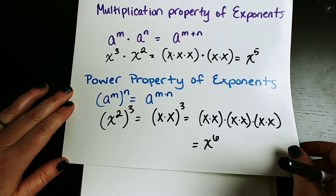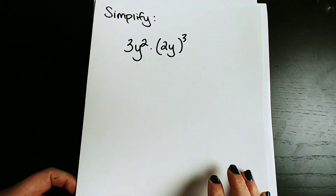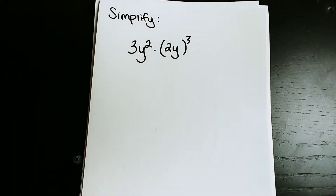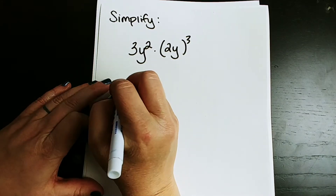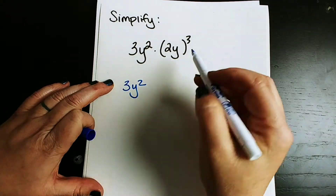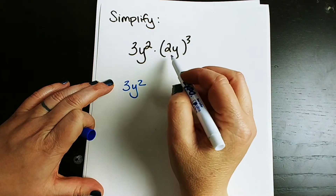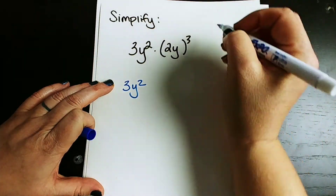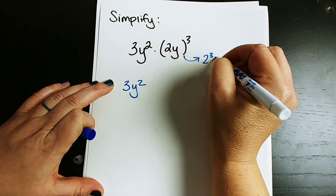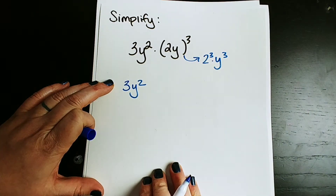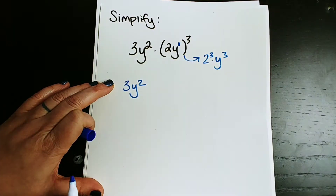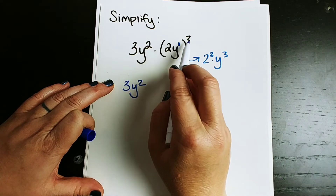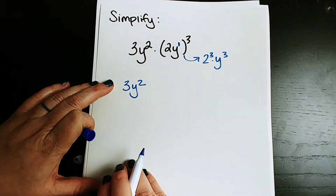Now let's go back to our actual problem. Something important to note: when we have 3y squared, only the y is being squared — the three is not being squared. Then here, we have to recognize that (2y) cubed is actually 2 cubed times y cubed. You're distributing this exponent to both things within the parentheses.